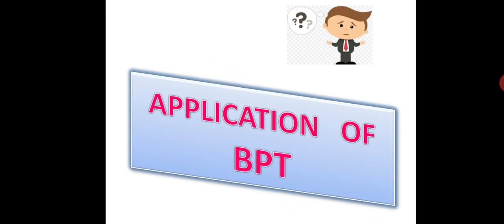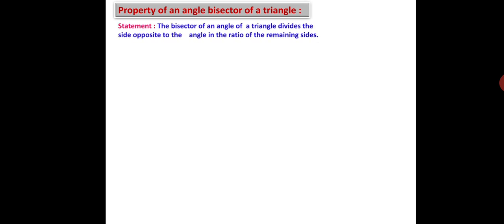The first application of the Basic Proportionality Theorem is the property of an angle bisector of a triangle. The statement is: the bisector of an angle of a triangle divides the side opposite to the angle in the ratio of the remaining sides.